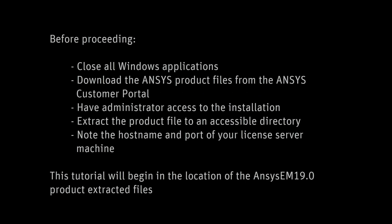In this demonstration you learn how to perform the installation for ANSYS Electronics Release 19 on the Windows platform. Before proceeding, close all Windows applications, download the ANSYS product files from the ANSYS customer portal, have administrator access to the installation, extract the product file to an accessible directory, and note the hostname and port of your license server machine. This tutorial will begin in the location of the ANSYS EM 19.0 product extracted files.